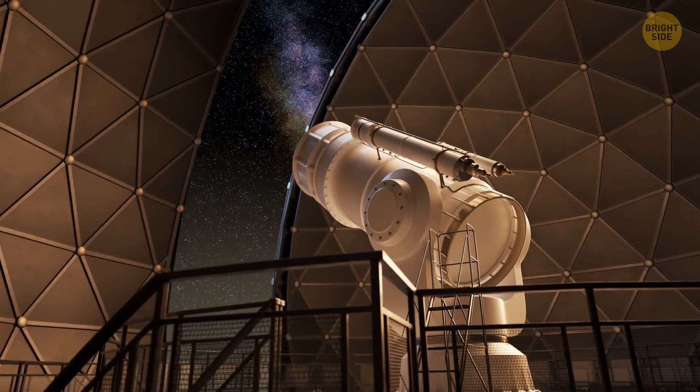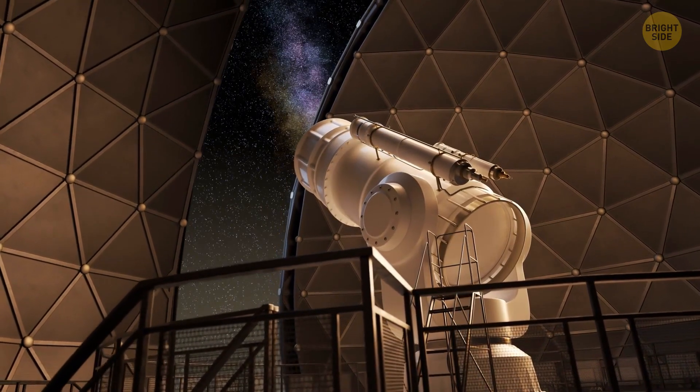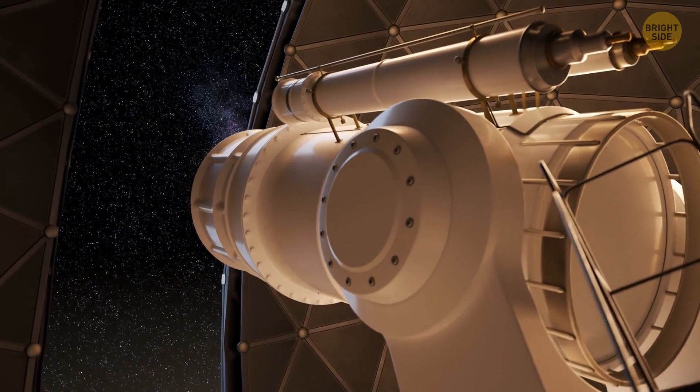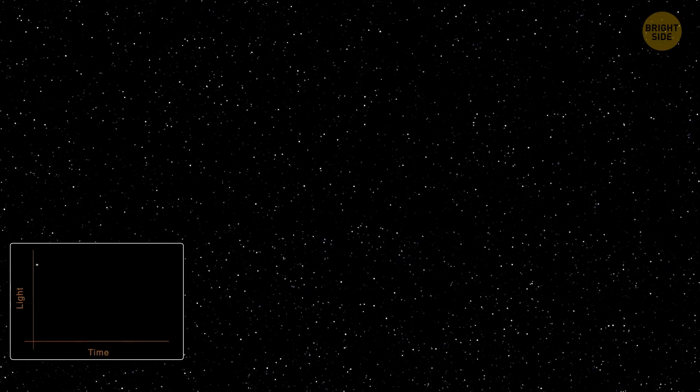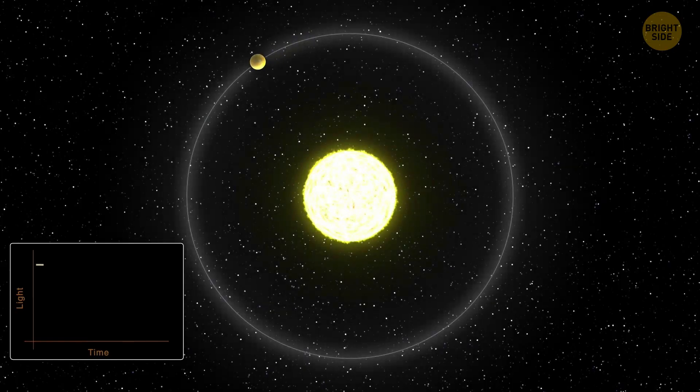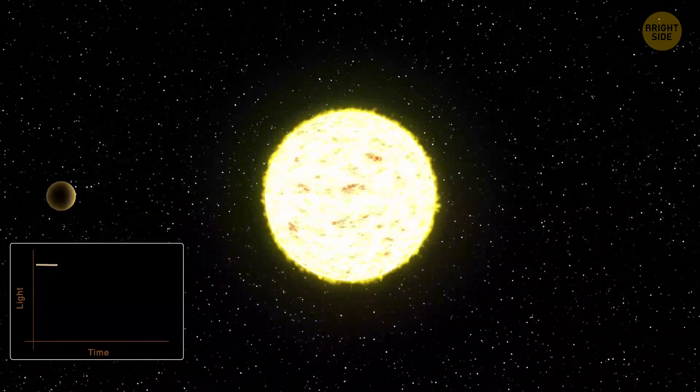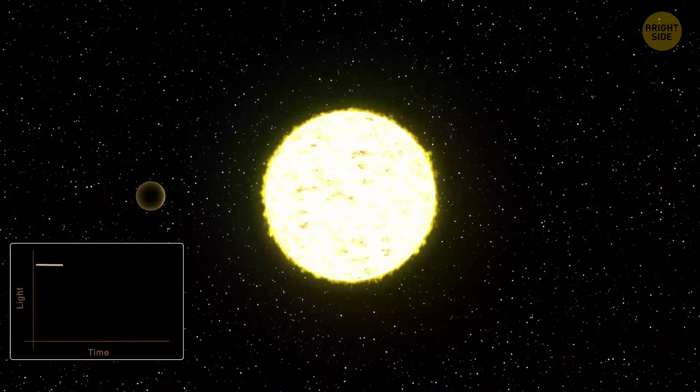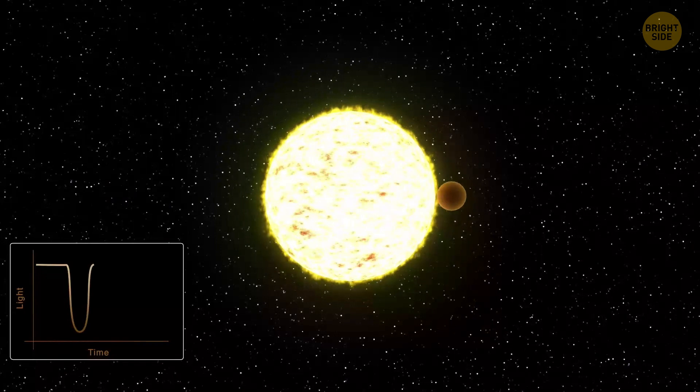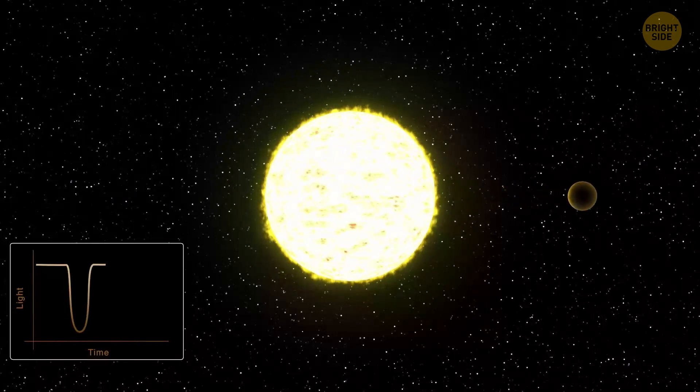Here's how. When we look at faraway planets called exoplanets, sometimes they cross in front of their parent stars. As the star's light passes through the planet's atmosphere, it gets all mixed up with different elements and molecules in the air. And you know what happens? The light changes its flavor and color in a special way.